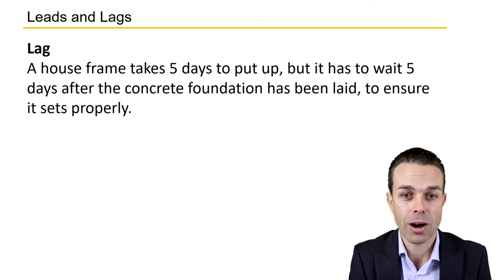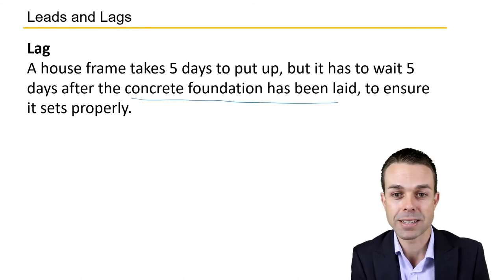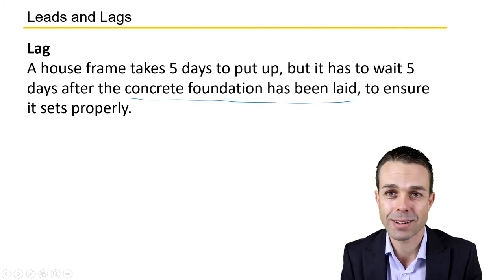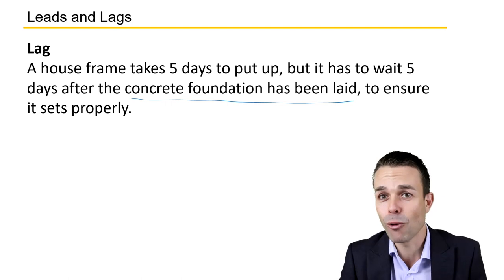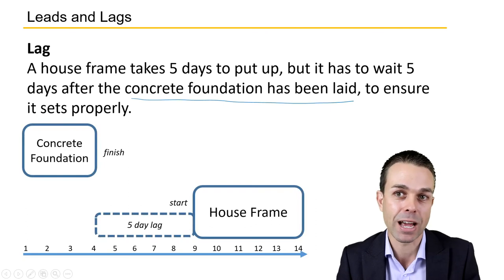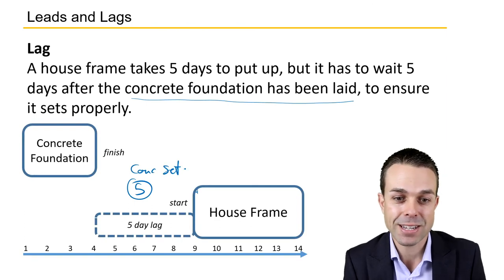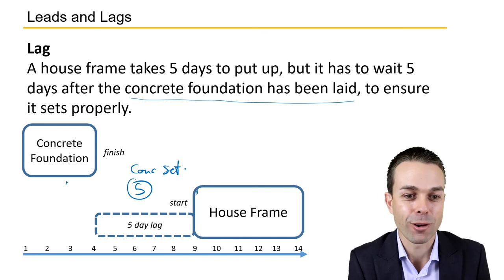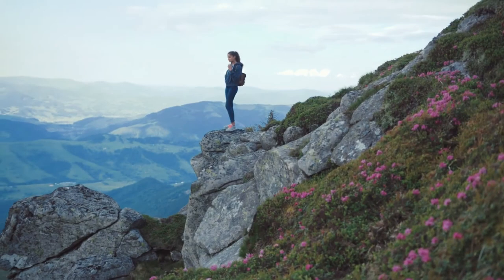Lag moves it the other way. A house frame might take five days to put up, but it also has to wait five days after the concrete foundation has been laid. We don't want to put anything on that concrete foundation in case it affects its integrity — we want to make sure it sets properly. So we have a five-day lag in our project schedule. The second activity is lagging behind the first, and that lag is five days long. That is the idea of leads and lags in your project schedule.